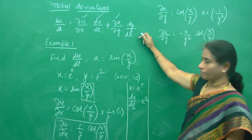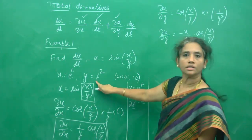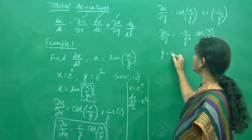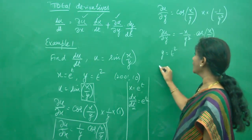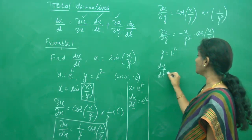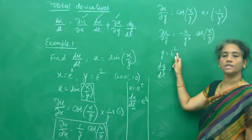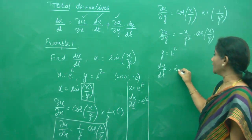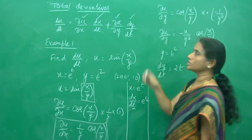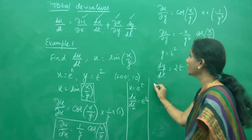Now let us find dy/dt. We are given y = t². Differentiating with respect to t, the derivative of t² is 2t. So dy/dt = 2t. Now we have everything ready — we just need to substitute and simplify.